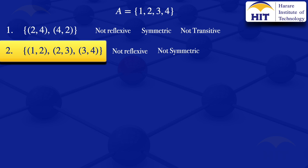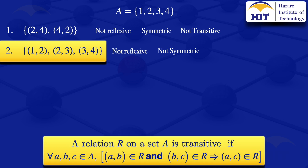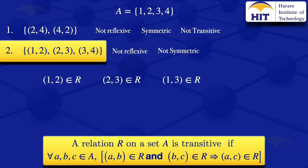Finally, checking if the second relation is transitive. By definition, a relation R on set A is transitive if whenever (a,b) and (b,c) are in R, then (a,c) is in R. Looking for pairs with common elements: (1,2) and (2,3) share the common element 2, so we check if (1,3) is in the relation. We don't have (1,3) in this relation, so the condition is violated and the relation is not transitive.